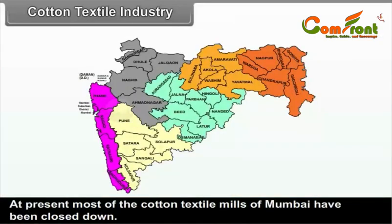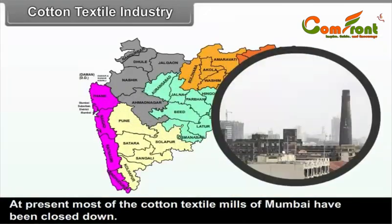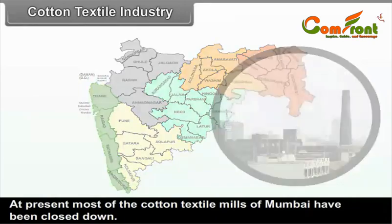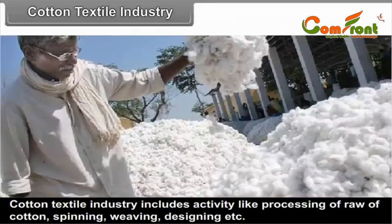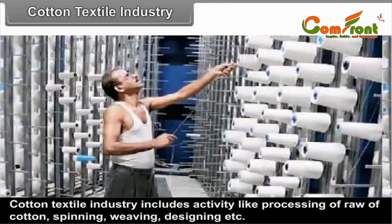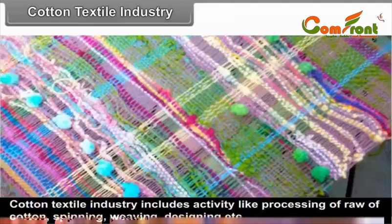At present, most of the cotton textile mills of Mumbai have been closed down. Cotton textile industry includes activities like processing of raw cotton, spinning, weaving, designing, etc.